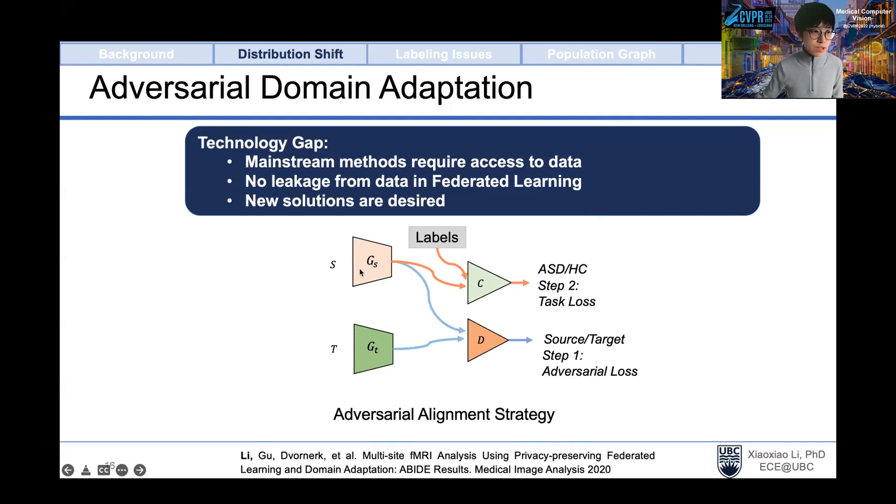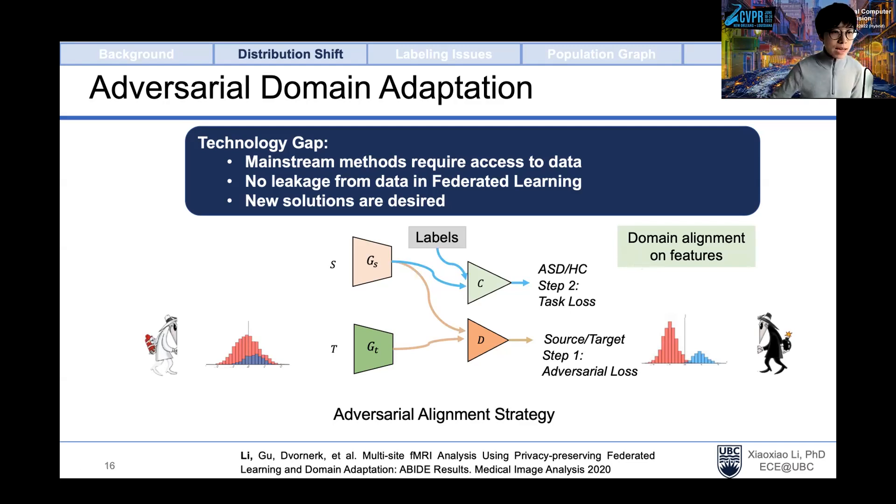To address this issue, we introduce the local feature extractor G and the domain discriminator D. First, this domain discriminator D is trying to identify which domain the feature comes from, performing like the black evil to enlarge the feature differences. Then the feature generator tries to confuse the discriminator D, performing as the white angel to reduce the discrepancy. If we train this federated learning model end to end, we can minimize the discrepancy between the source and target domain. Because the adaptation is performed at the feature domain and sharing features can be sensitive in federated learning, we also introduce differential privacy to protect the feature privacy.